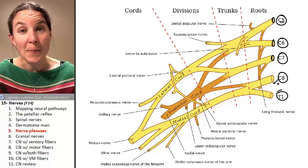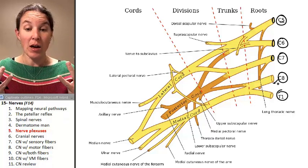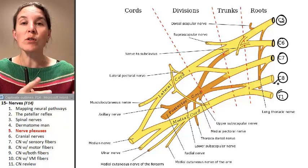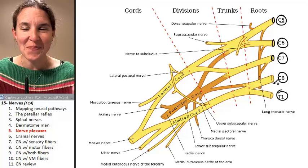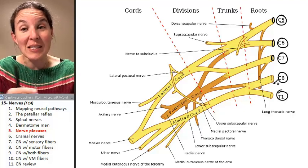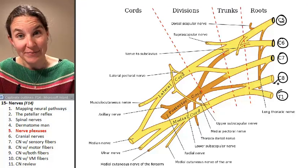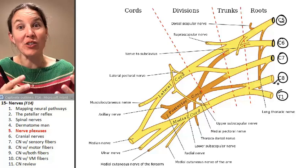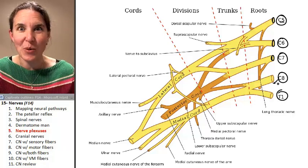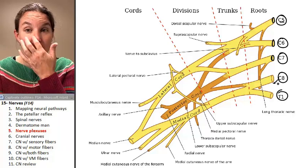The brachial plexus is made of several named nerves that we'll look at and they come from C5 through T1. Those are all the spinal nerves that are contributing pathways to make up the brachial plexus.